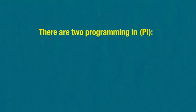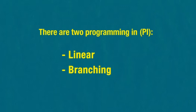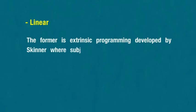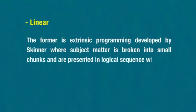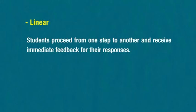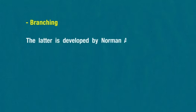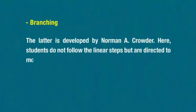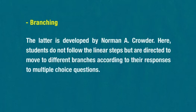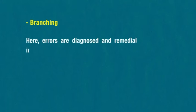There are two types of programming in PI: linear and branching. Linear programming is extrinsic programming developed by Skinner, where subject matter is broken into small chunks presented in logical sequence called frames. Students proceed from one step to another and receive immediate feedback. Branching programming was developed by Norman A. Crowder. Here, students don't follow linear steps but are directed to different branches according to their responses to multiple-choice questions. Errors are diagnosed and remedial instruction is provided. It is also called intrinsic programming.